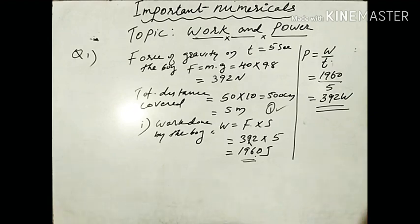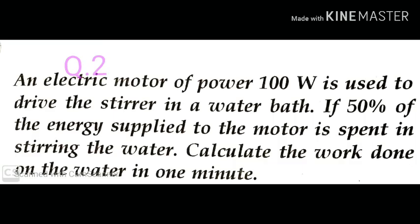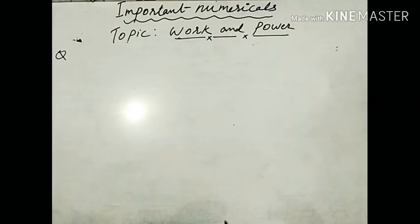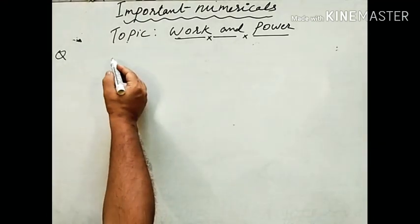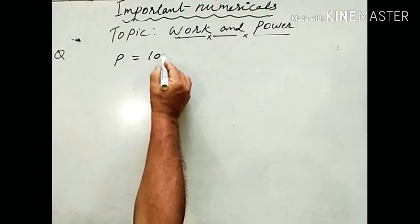Question two: an electric motor of power 100 Watt is used to drive a stirrer in a water bath. If 50% of the energy supplied to the motor is spent in stirring the water, calculate the work done on the water in one minute. The given power is 100 Watt.